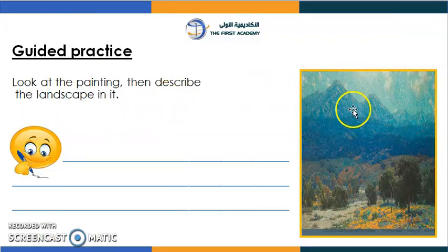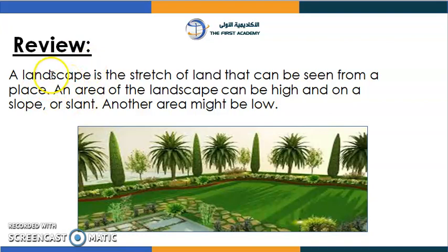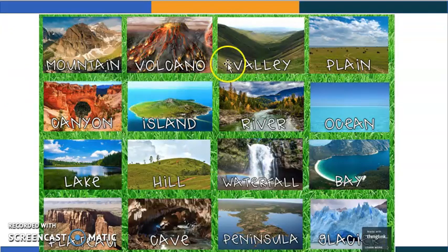Everyone, look at the painting and describe the landscape in it. Let's read this together. Review: a landscape is a stretch of land that can be seen from a place. An area of landscape can be high and on a slope or slant. Another area might be low. Let's look for the high areas — we call them slopes or slants. Can you tell me where the high areas are?